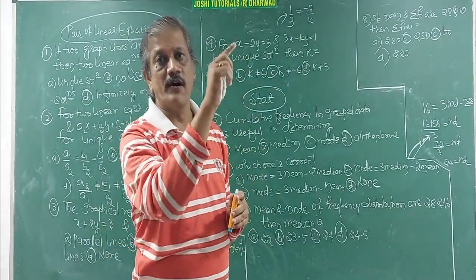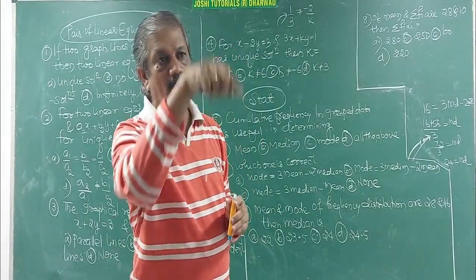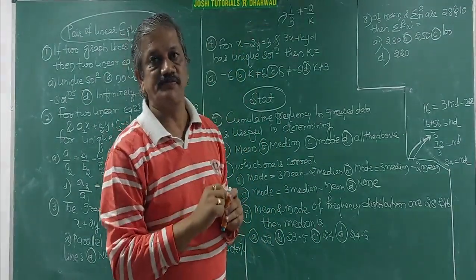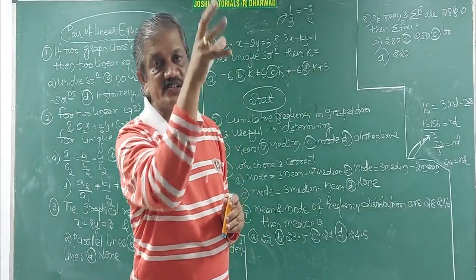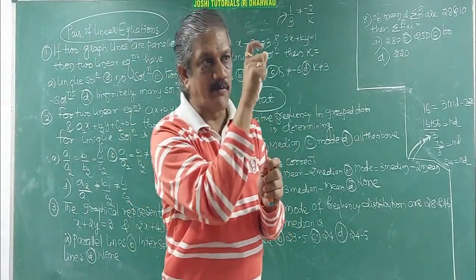L plus n by 2 minus c of the order of i over the bracket h, or i. It is the size of class interval. And remember, class interval will be continuous.